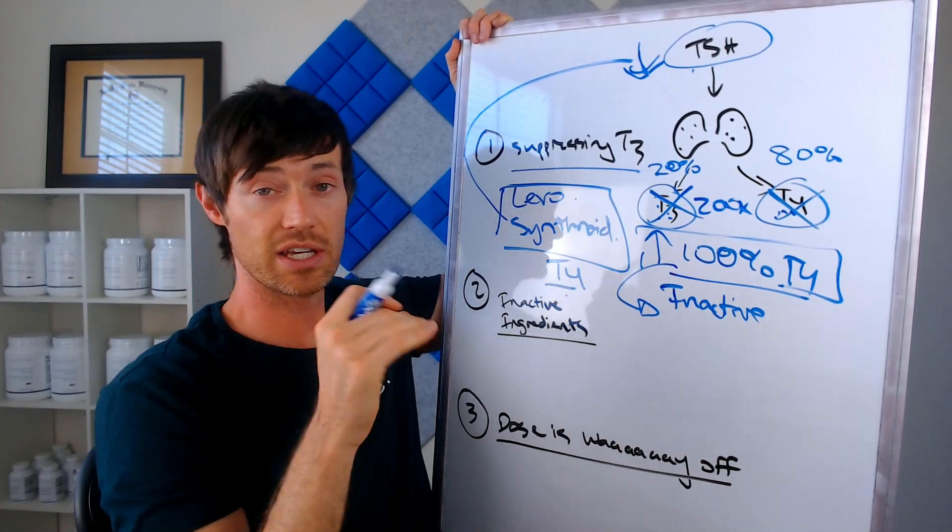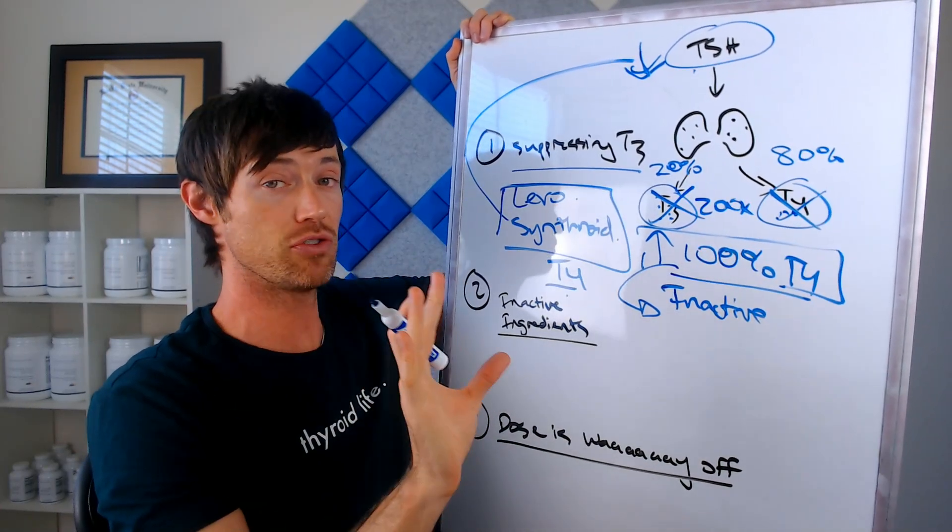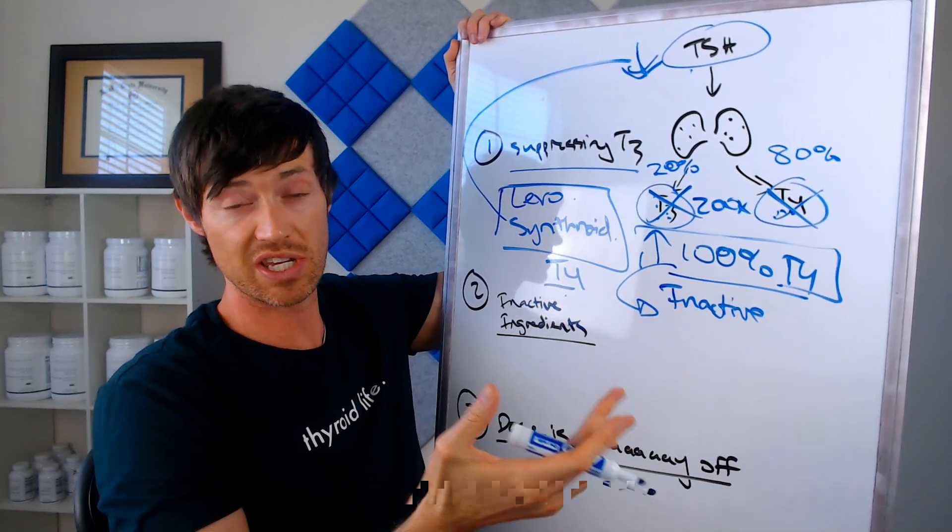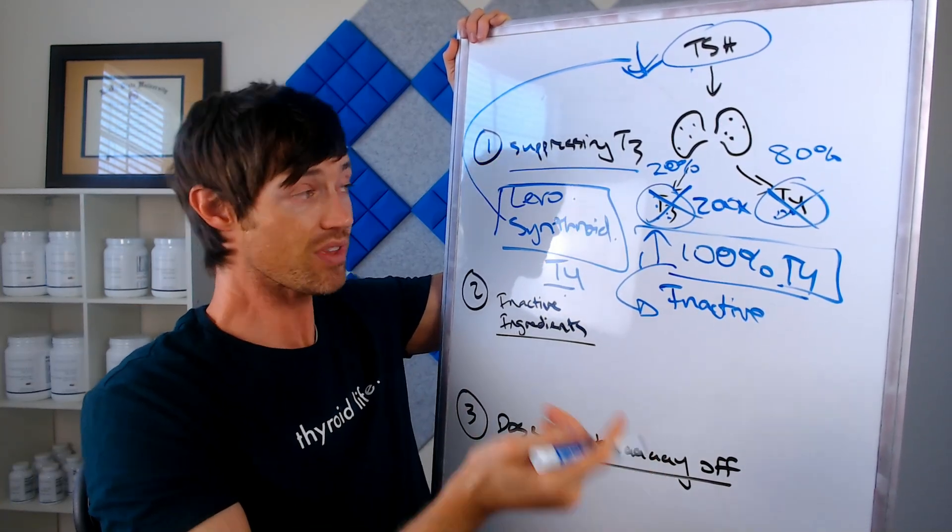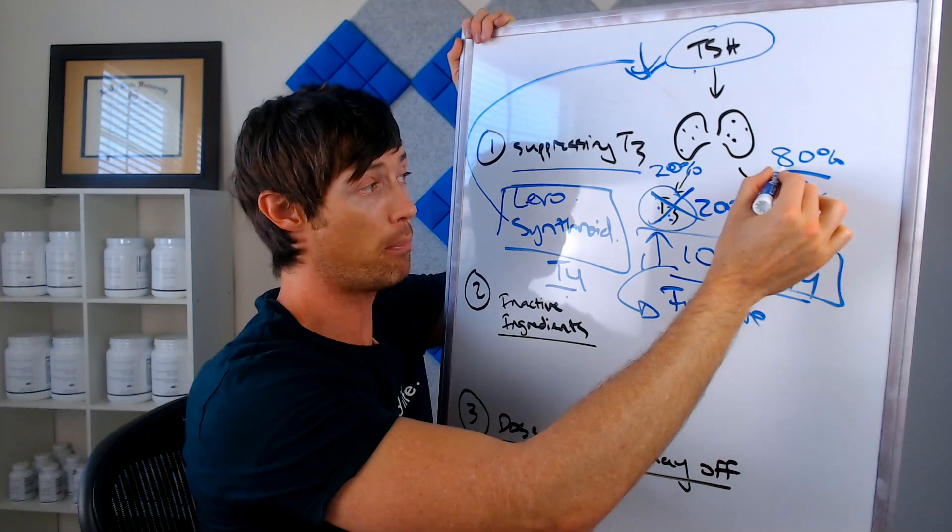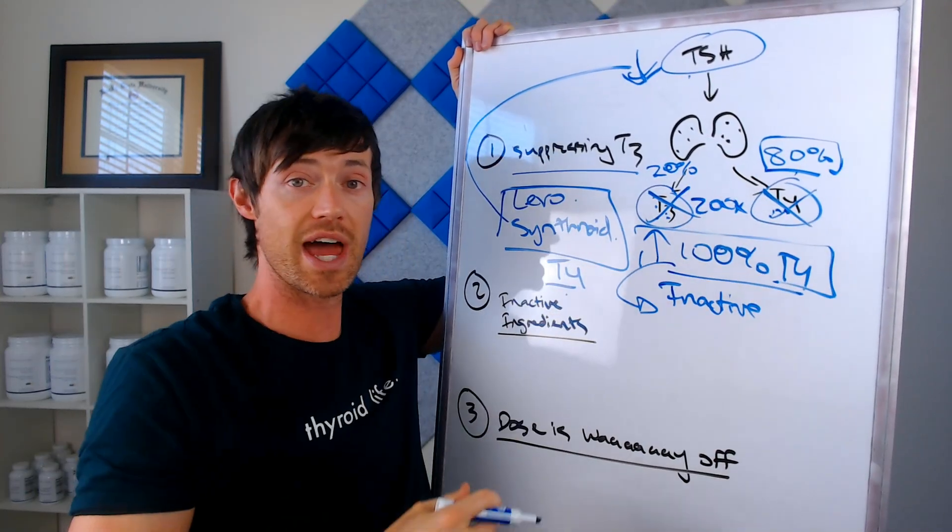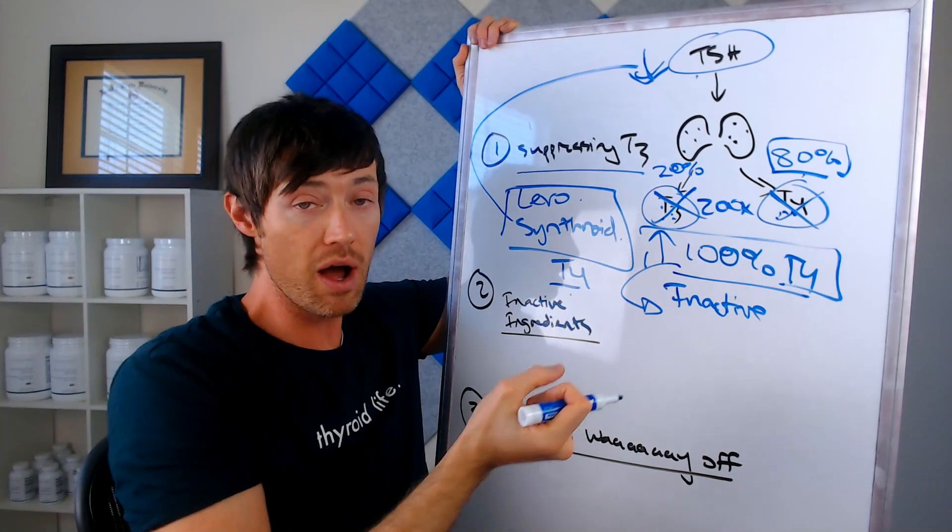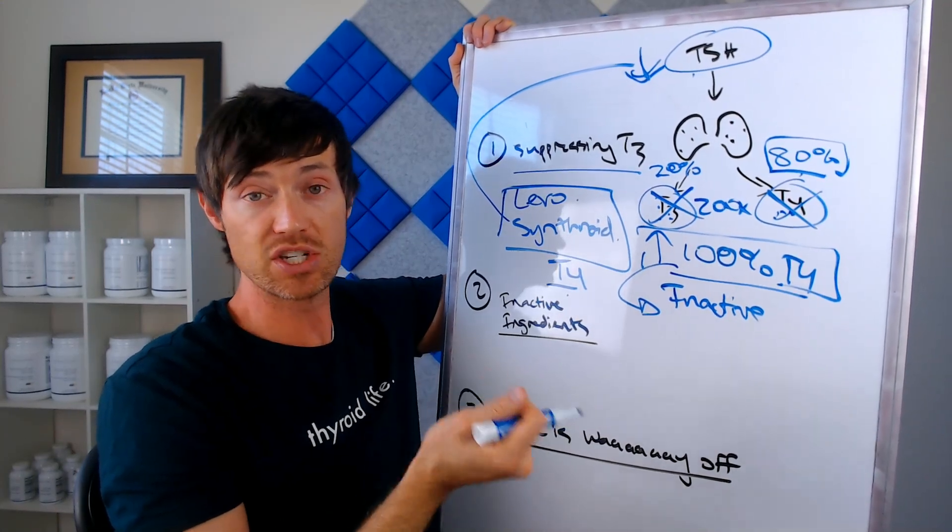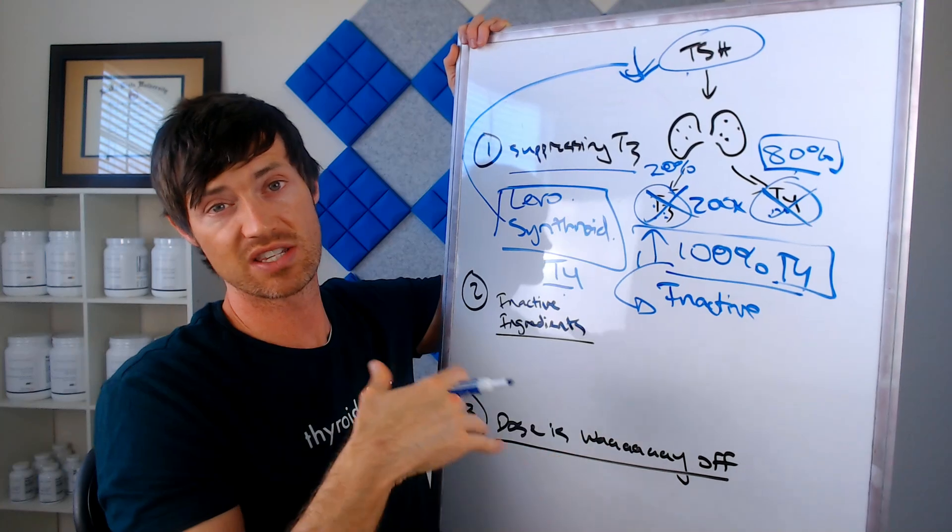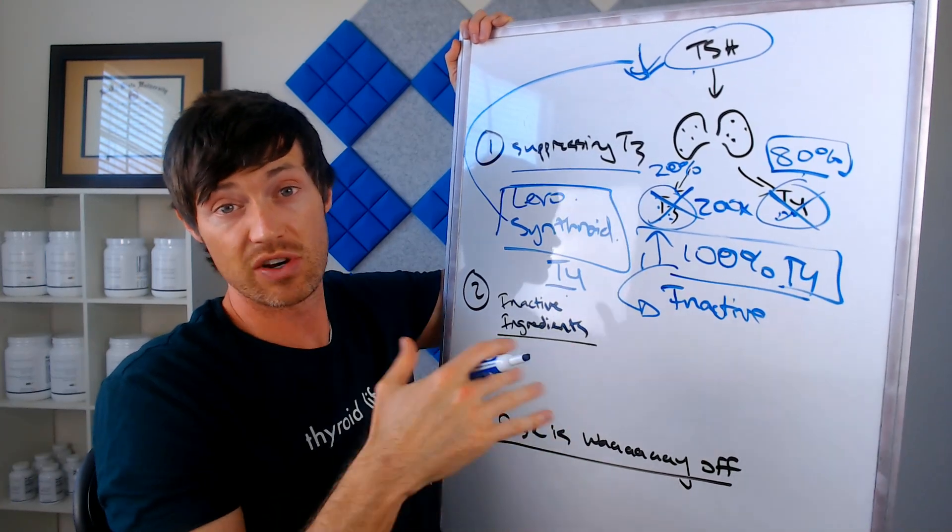And the reason your body produces some T3 automatically is because it knows how important that T3 is. So automatically, every day without you thinking about it in the healthy state, your thyroid is just pumping out a little bit of T3 just so that your tissues and cells can get the amount of T3 that it needs. At the same time, it's producing a pretty big amount of T4 more than it is T3 because it knows that when necessary, your body can draw upon that T4 and convert it into T3 as necessary based on the needs of the cell.